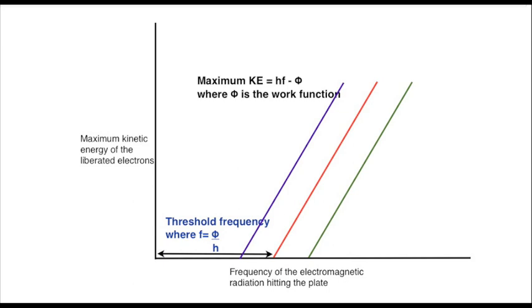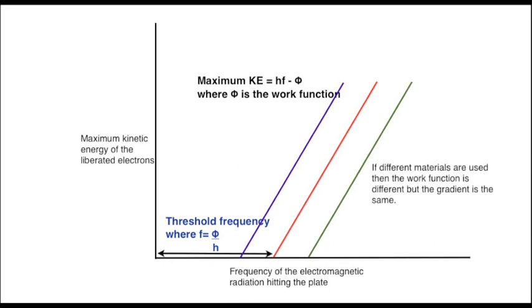If we put other materials on the top of the electroscope, rather than zinc, other metals for example, the threshold frequencies would be different because the work function for each one will be different. We have a family of graphs, all with the same gradient, but with different intersections.